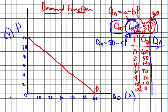At a price of 0, our quantity demanded is 50. At a price of $2, that's 5 times 2 which is 10, so 50 minus 10 is 40. Then 30, 20, 10, and 0 for prices of $4, $6, $8, and $10. I plugged in $2, which got me 40. Plugged in 4 — 5 times 4 — and 6 times 5 is 30, so 50 minus 30 is 20. That's how we got that demand schedule.